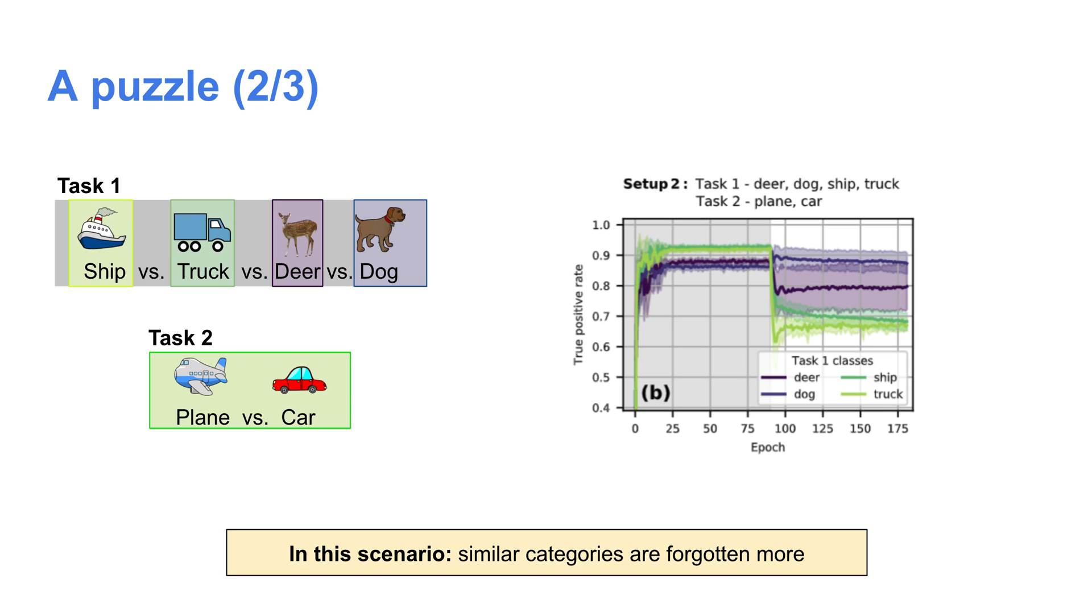Now let's look at a slightly different scenario. Here, our initial task is four-way classification between two vehicles, ship and truck, and two animals, deer and dog. Our second task is to classify between plane and car, two vehicles. So how does this second task affect the performance of the network on each of the four initial categories?